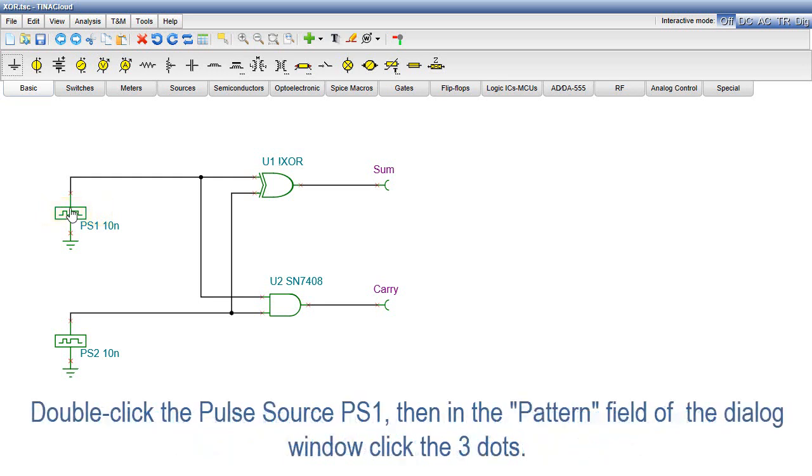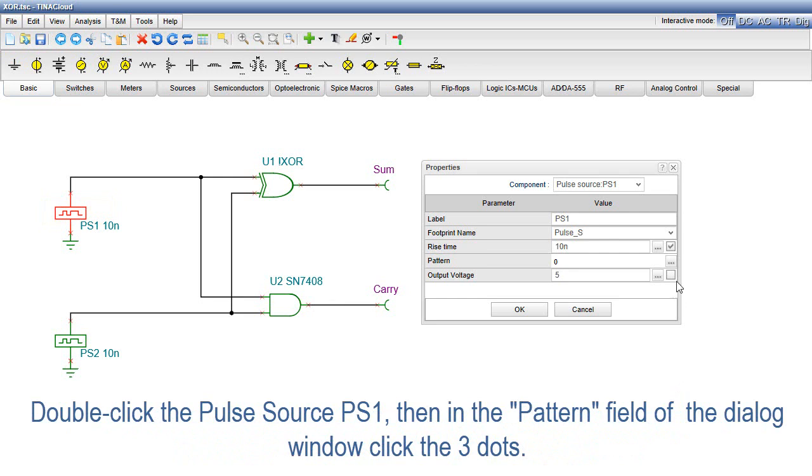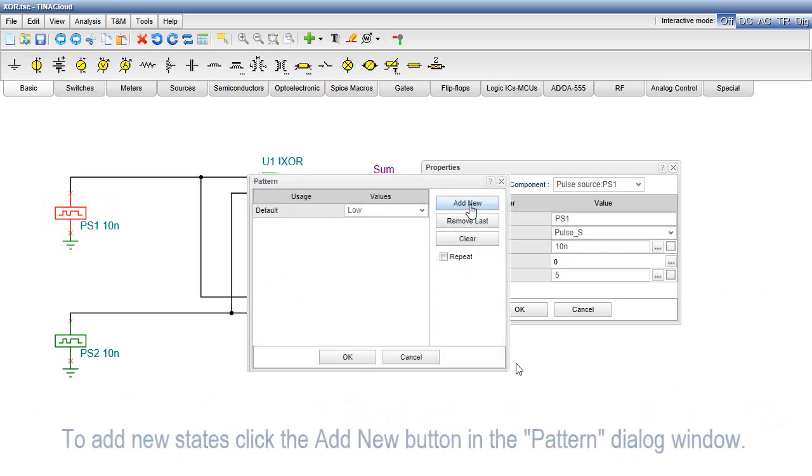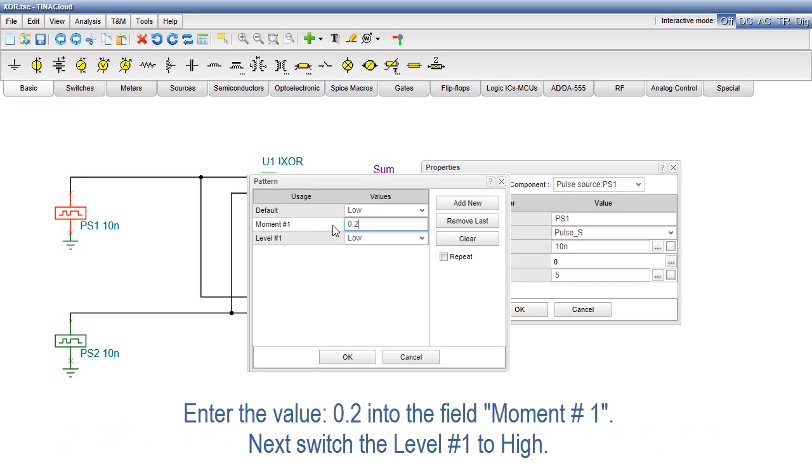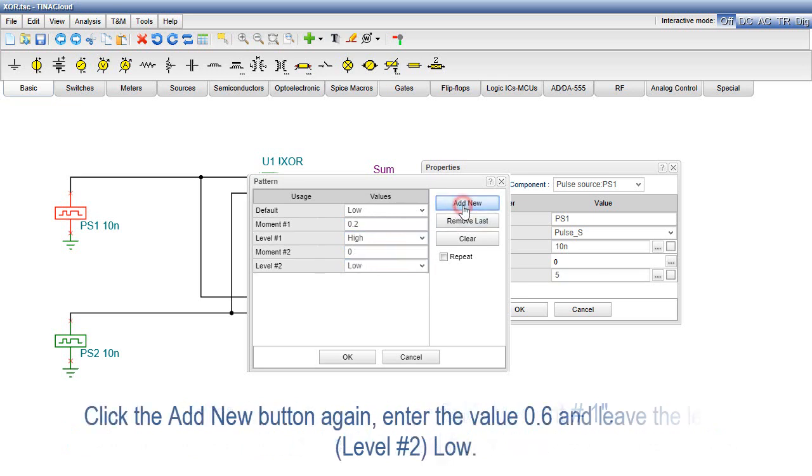Double-click the pulse source PS1, then in the pattern field of the dialog window, click the three dots. To add new states, click the Add New button in the Pattern dialog window. Enter the value 0.2 into the field Moment No. 1. Next, switch the level No. 1 to High.